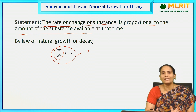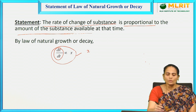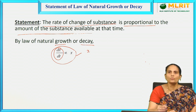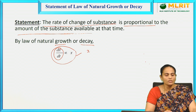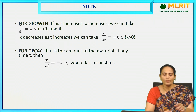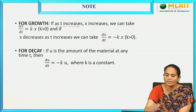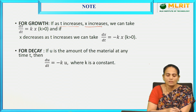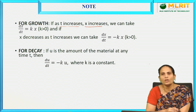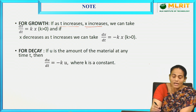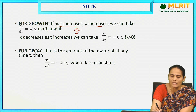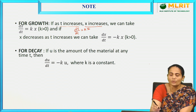Now we will see the two different cases that exist here. One is growth and the other is decay. For growth, as t increases, x increases, so we take the proportionality constant as positive. That means the equation is dx/dt = k·x.